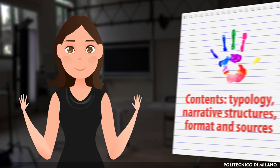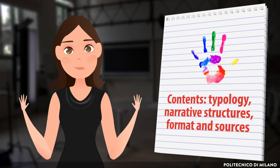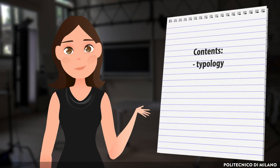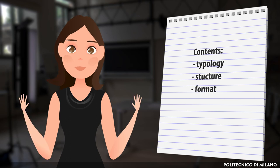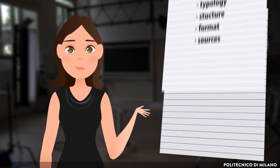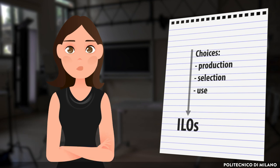As we have seen, the teacher-designer can act on various dimensions when designing contents. There are various types of contents, different narrative structures and formats through which we can convey contents, and various sources to use or from which to start. There are also various choices we must make, not only in terms of production, but also in terms of selection and use. The guides are always the intended learning outcomes we tend to reach.